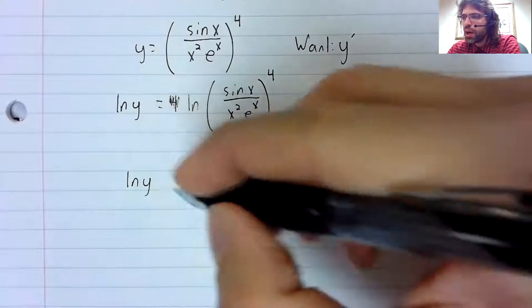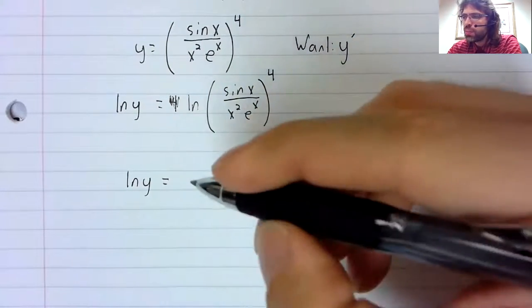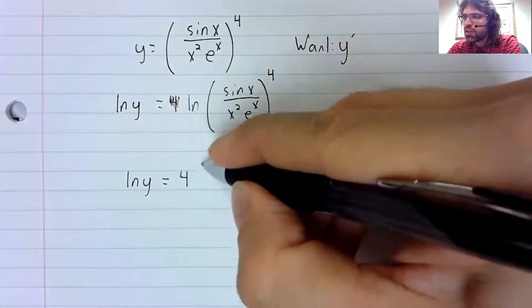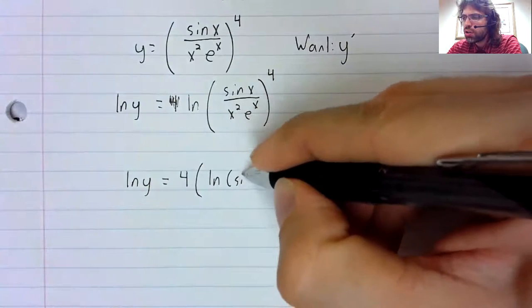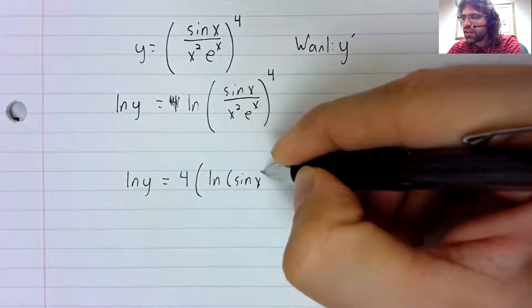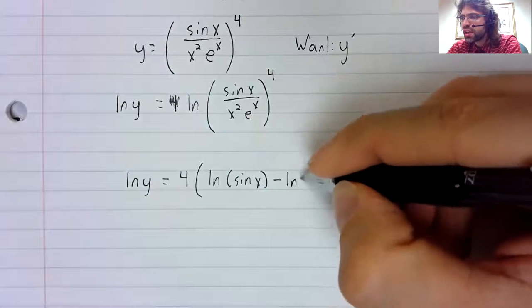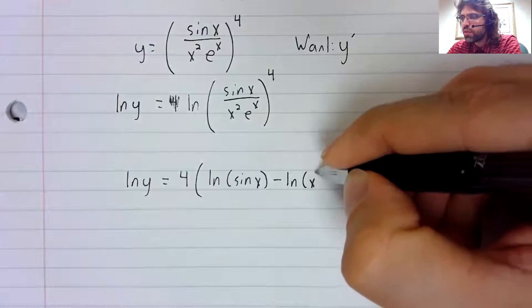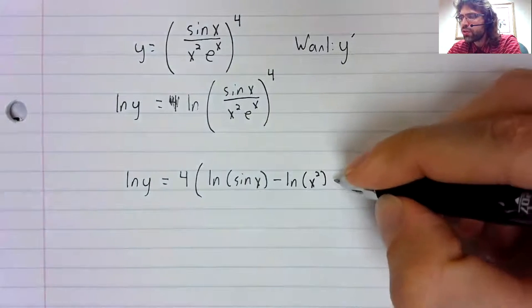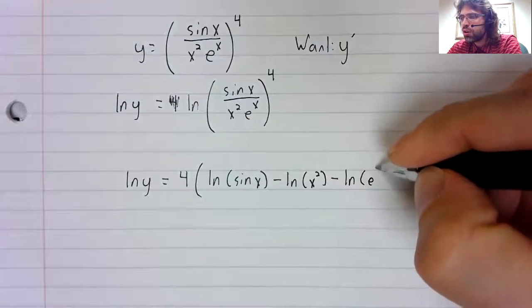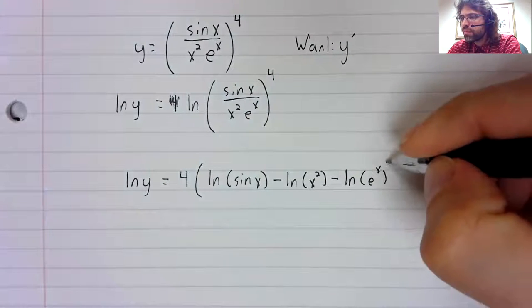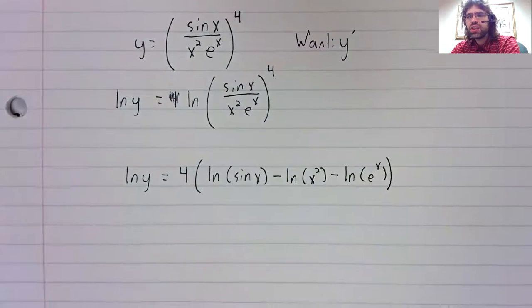ln y equals four times the natural log of sine of x minus the natural log of x squared minus the natural log of e to the x.